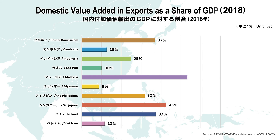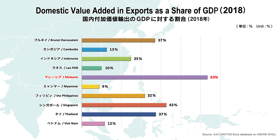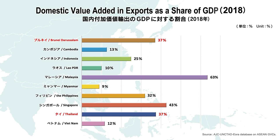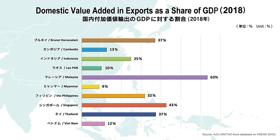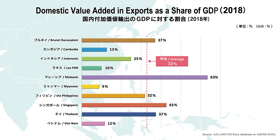This table shows the domestic value added in exports as a share of GDP. Malaysia has the highest percentage at 63 percent, followed by Singapore at 43 percent, Brunei and Thailand at 37 percent each. These percentages show how much domestic value added contributes to value-added trade. The average domestic value added of the 10 ASEAN member countries is 33 percent.